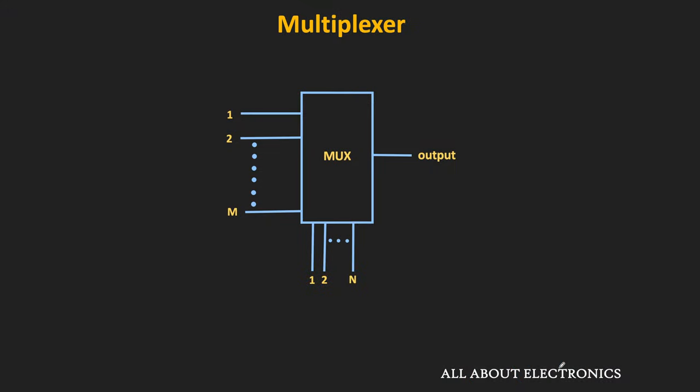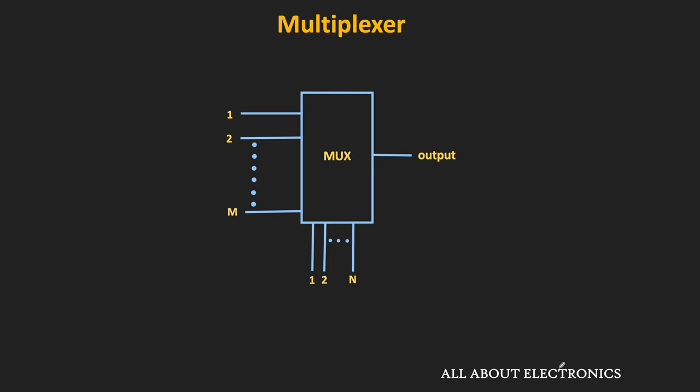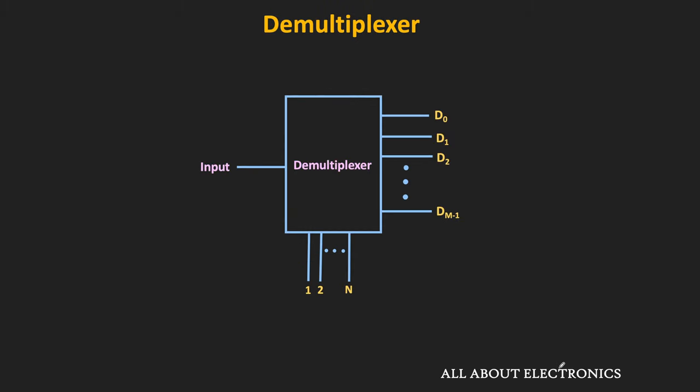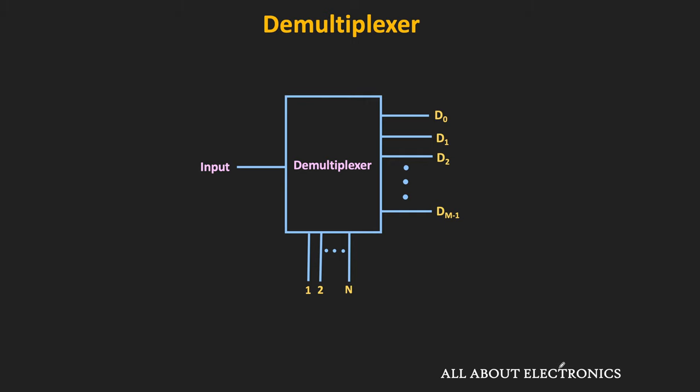In the earlier video on the multiplexer, we saw that the multiplexer is a many-to-one device — it has several inputs and one output, and depending on the selection line inputs, only one input is connected to the output. The demultiplexer is exactly opposite: it is a one-to-many device with one input, several outputs, and several selection lines to select a specific output.